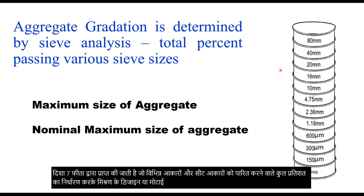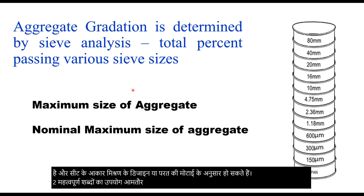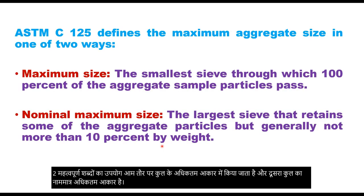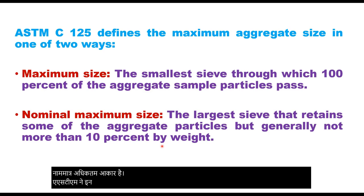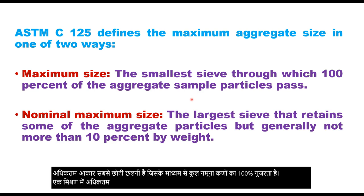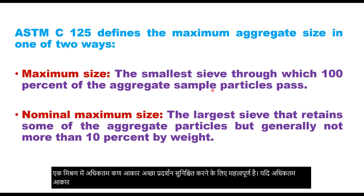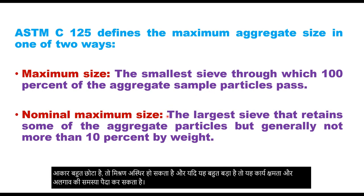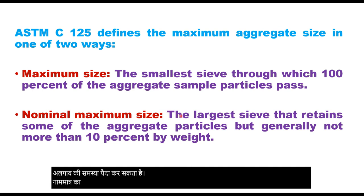Two important terms are generally used: one is maximum size of aggregate and another is nominal maximum size of aggregate. ASTM has defined these two sizes. Maximum size is the smallest sieve through which 100% of the aggregate sample particles pass. The maximum particle size in a mixture is important to ensure good performance. If the maximum size is too small, the mix may be unstable, and if it is too large, it may create problems of workability and segregation. Nominal maximum size is the largest sieve that retains some of the aggregate particles but generally not more than 10% by weight.